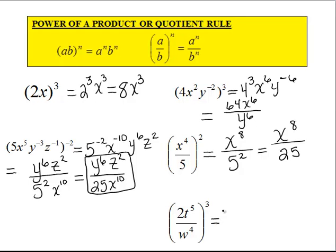On the very last example, we'll write 2 to the third, t to the fifteenth, since 5 times 3 is 15, over w to the twelfth, since 4 times 3 is 12. Once more, you can further simplify this. 2 to the third power is 8, so we have 8t to the fifteenth over w to the twelfth.